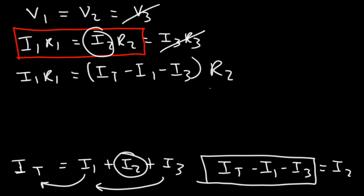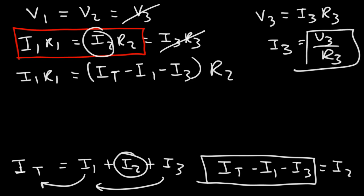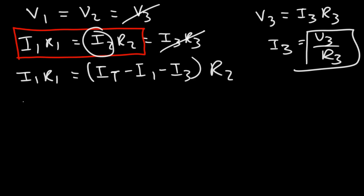Now, what we need to do is get rid of I3 because it wasn't part of the first equation that we used to solve that circuit. So how can we get rid of I3? Keep in mind, V3 is I3 times R3. So I3 is V3 divided by R3. So let's use this substitution.